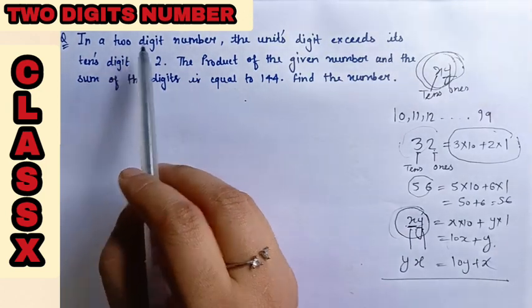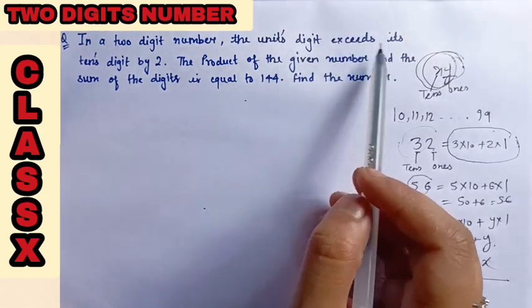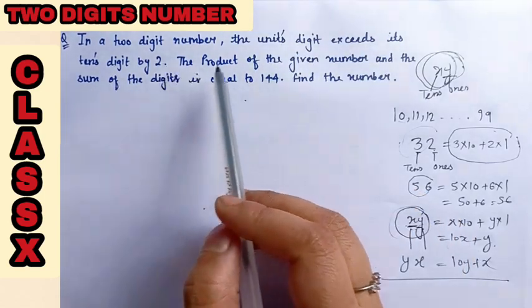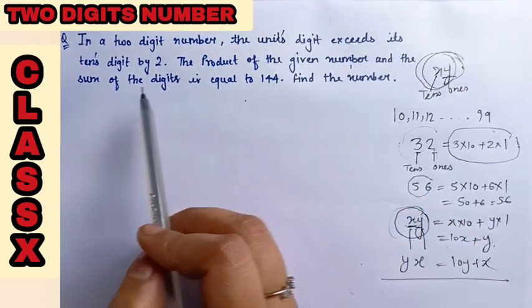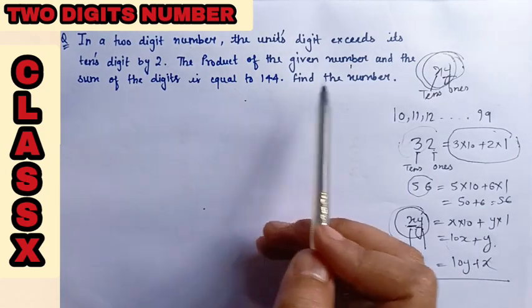Now we have to find the two-digit number whose unit digit exceeds the 10th digit by 2, and the product of the given number and the sum of the digits is 144. Find the number.